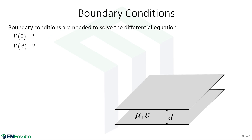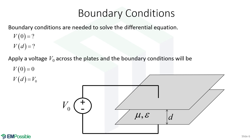Before we can solve it, we need boundary conditions — what is the electric potential on the top plate and the bottom plate? We will apply a voltage V0. If we let the bottom plate be ground, we set our electric potential at Y equals zero to zero, and the electric potential at Y equals D — a distance D above the ground at the top plate — to V0. Another valid choice would be to set the bottom plate to minus V0 over 2 and the top to plus V0 over 2. The only thing that matters is that the difference between the two should be V0.